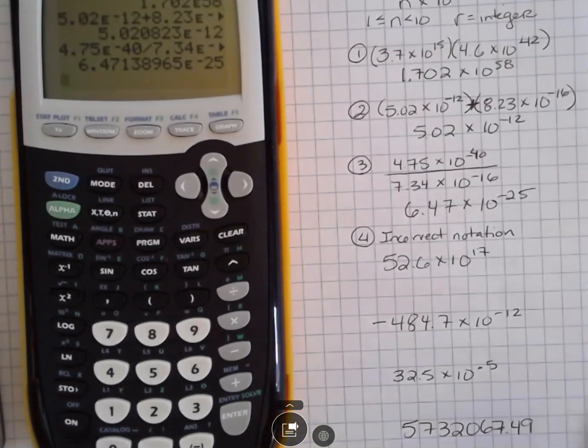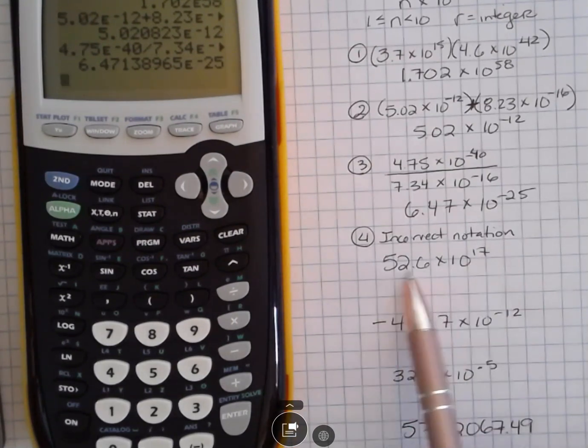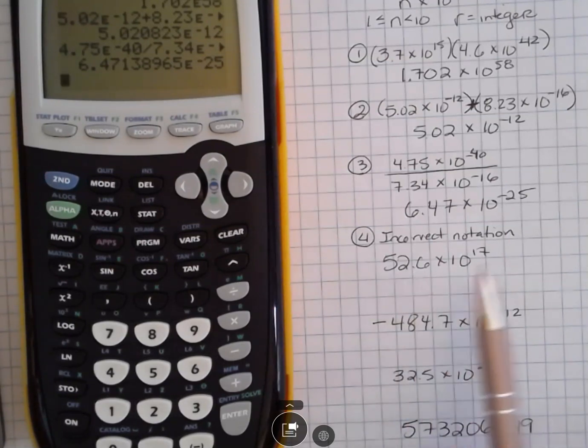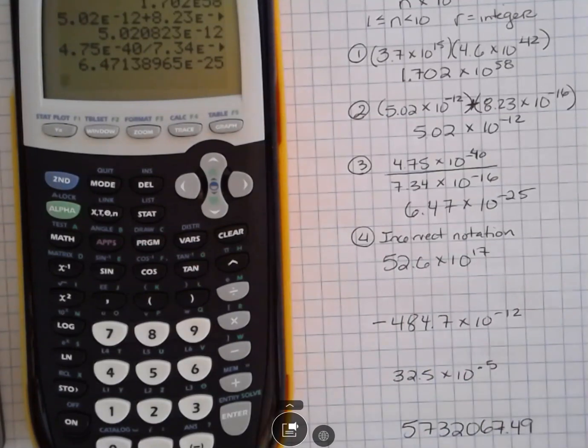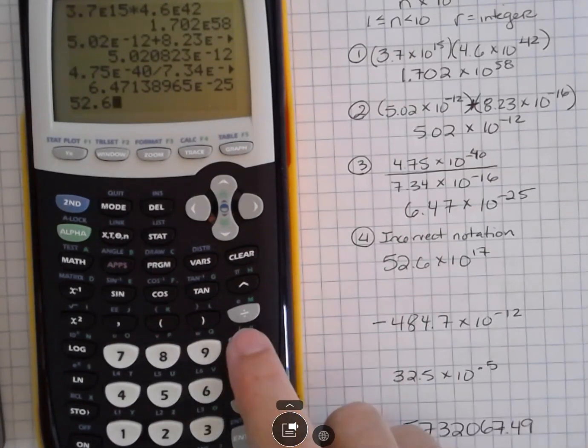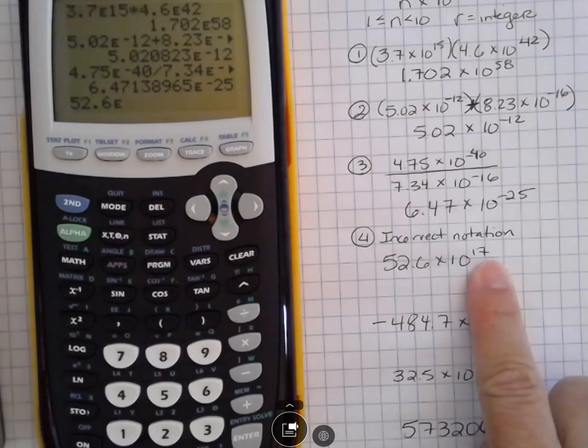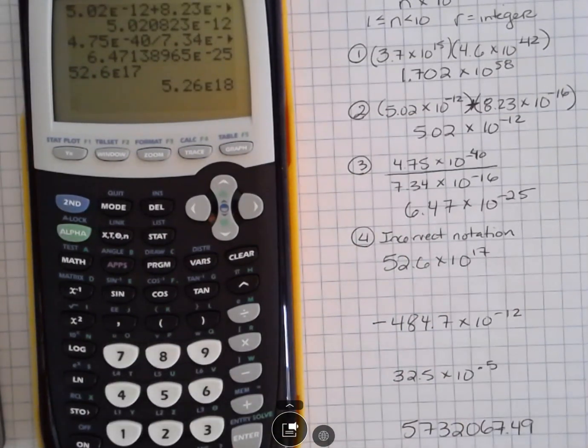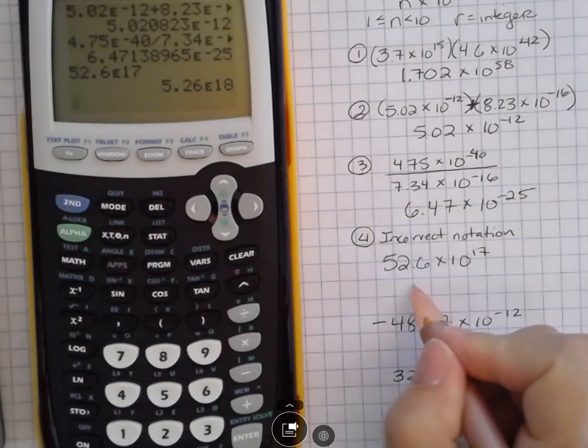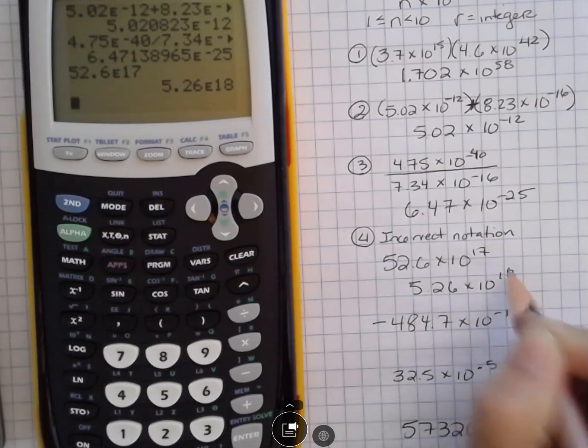Also, if you have something that's an incorrect scientific notation, this is incorrect because this number is not between 1 and 10, and you didn't know for sure if this would become 18 or 16, you can put that into your calculator. Go ahead and enter it as it is, 52.6, second function EE, 17th power, and then hit enter, and what that's going to do is it's going to fix it for you because it's going to recognize that was not correct scientific notation. 5.26 times 10 to the 18th would be correct.